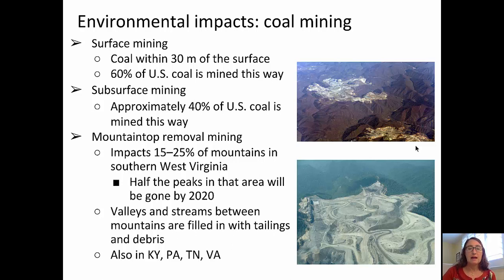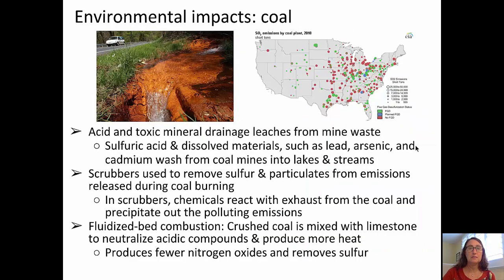Additional problems come from the fact that the valleys and streams are being filled in with tailings and debris. This is also a problem in Kentucky, Pennsylvania, Tennessee, and Virginia. Some other environmental impacts of coal are that acid and toxic mineral drainage leeches from mine waste, including sulfuric acid and dissolved materials such as lead, arsenic, and cadmium.